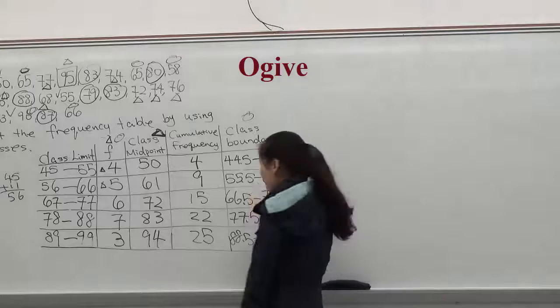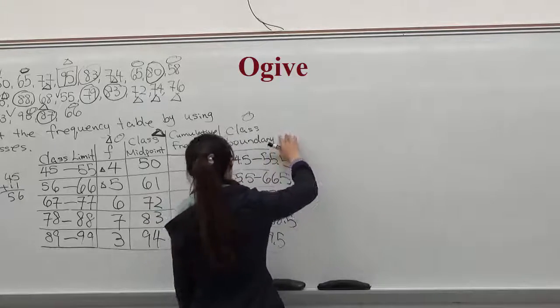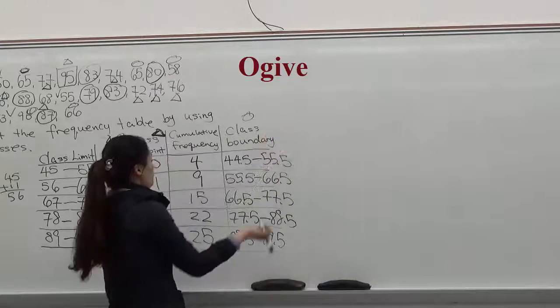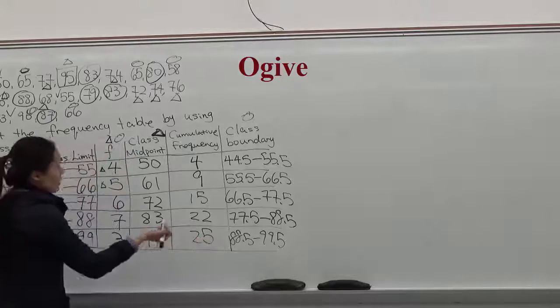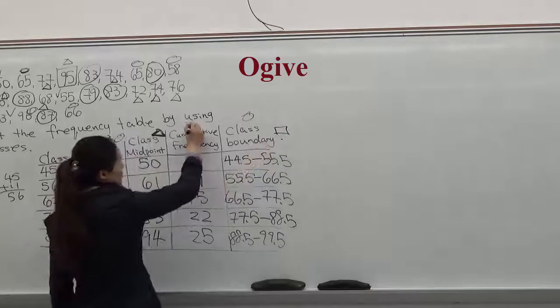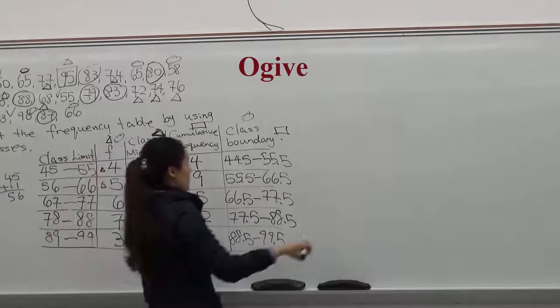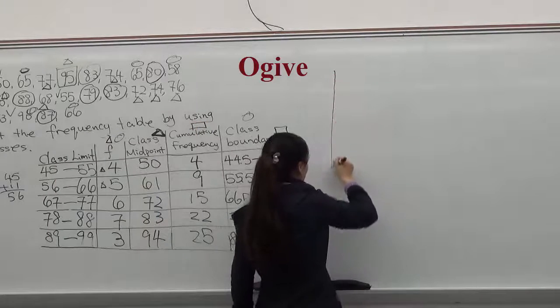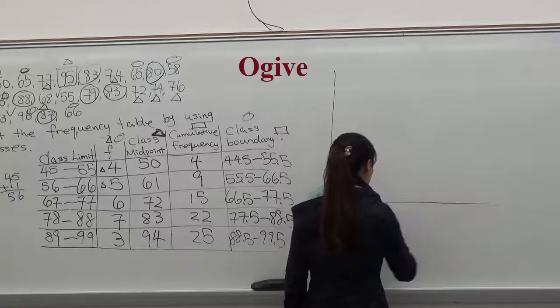We'll use the same frequency distribution table to construct a frequency ogive. We will have to use class boundaries. This is the column we have to use in the cumulative frequency.